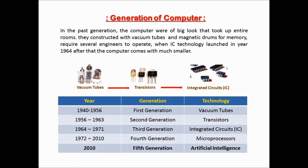Now we see the chart of computer generations. Year 1940 to 1956 called first generation, used technology: vacuum tubes. Year 1956 to 1963 called second generation, used technology: transistors. Year 1964 to 1971 called third generation, used technology: integrated circuits. Year 1972 to 2010 called fourth generation, used technology: microprocessors. Year 2010 to now called fifth generation, used technology: artificial intelligence.